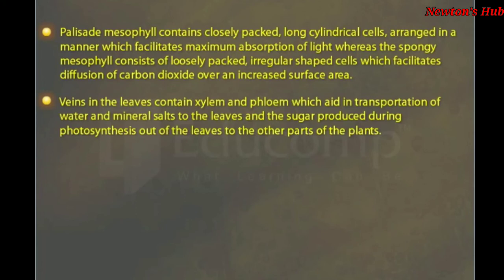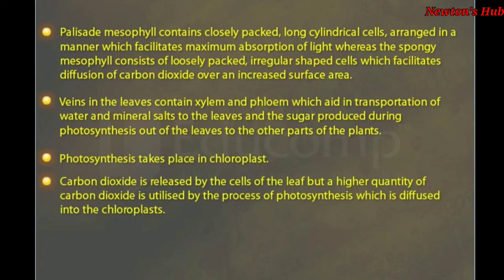Veins in the leaves contain xylem and phloem which aid in transportation of water and mineral salts to the leaves and the sugar produced during photosynthesis out of the leaves to the other parts of the plants. Photosynthesis takes place in chloroplasts. Carbon dioxide is released by the cells of the leaf but a higher quantity of carbon dioxide is utilized by the process of photosynthesis which is diffused into the chloroplasts.